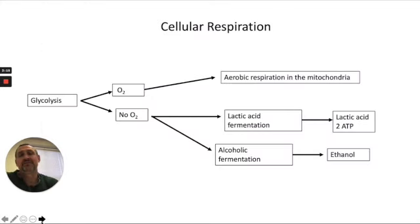So respiration can be divided into two major categories, anaerobic or aerobic. Aerobic respiration occurs in the mitochondria, and it requires oxygen. If there is no oxygen present in the animal cell, then the chemical pathway will be lactic acid fermentation.